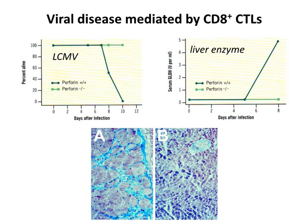Further proof that this is CD8-mediated: wild-type mice infected with LCMV die within 10 days, but perforin knockout mice—lacking the gene for one of the proteins in the CTL responsible for killing infected cells—all survive. So the CTLs are causing death. Measuring a liver enzyme in wild-type mice shows it going up, indicating liver damage from virus killing liver cells; in the perforin knockout mice there's no liver enzyme in the blood. Also, sections of myocardium from mice infected with Coxsackievirus show extensive heart cell damage in wild-type mice, but no damage in perforin knockout mice—confirming that CD8-positive cytotoxic T lymphocytes mediate heart damage in that infection.